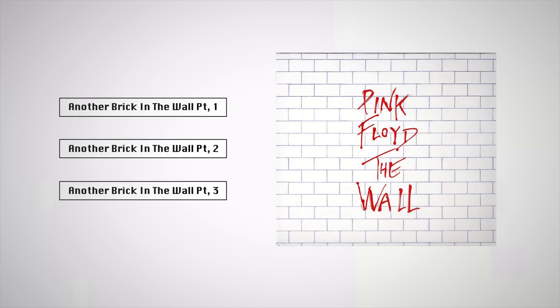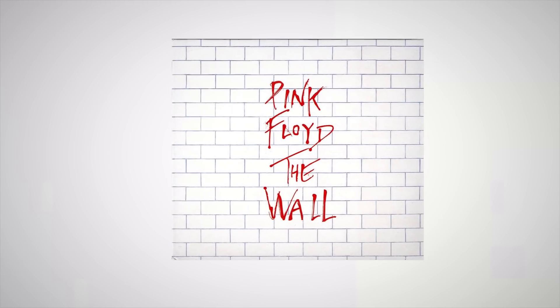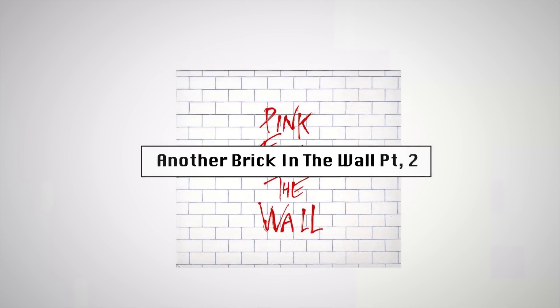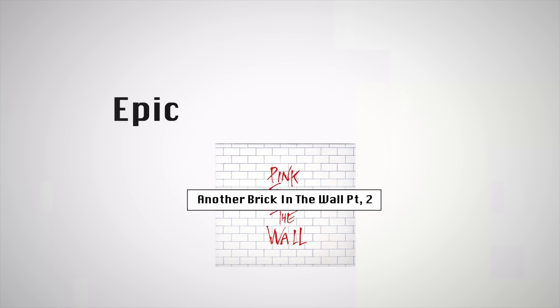Another Brick in the Wall was a set of three songs that Pink Floyd made for their 1979 record, The Wall. Part 2 became a massive hit all around the world with its epic cadence and simple mix of disco and prog rock.